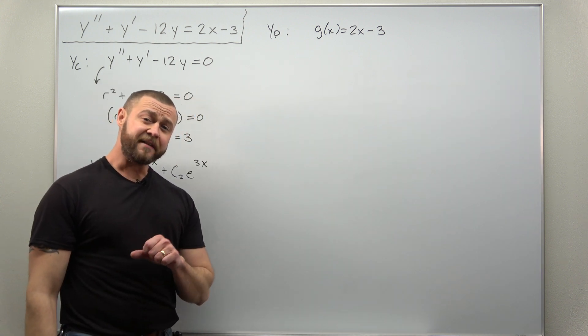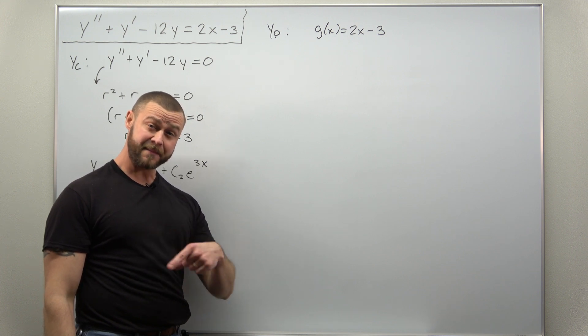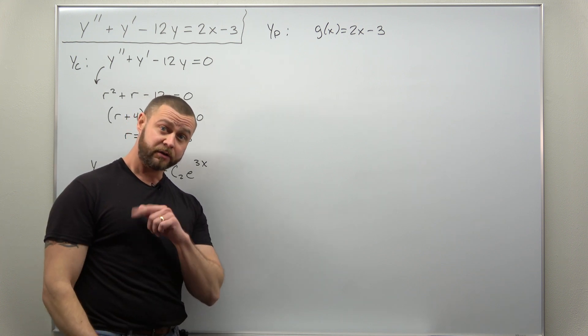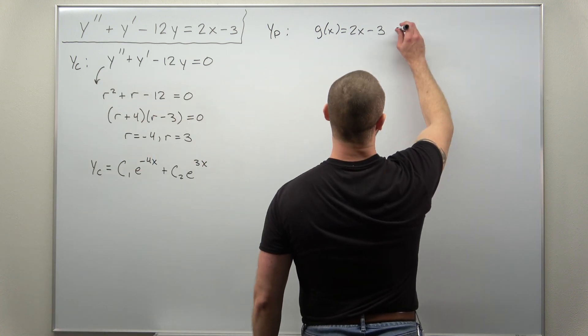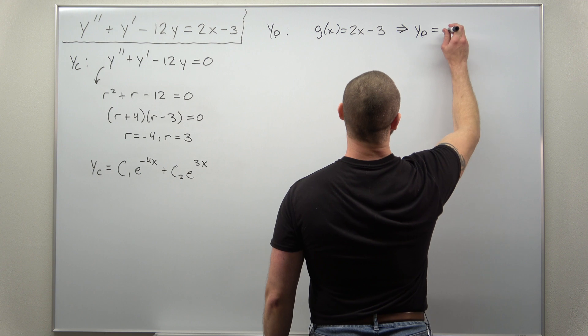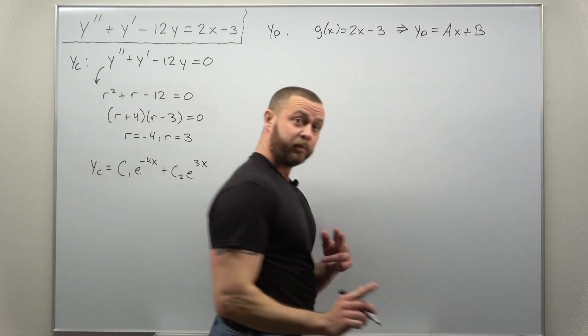Since that is a very simple degree one polynomial, we try a form for yp as a general degree one polynomial. So we might try yp as ax plus b.